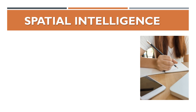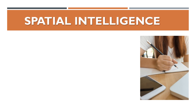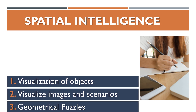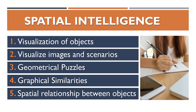So let's get into the video. Now we were talking about spatial intelligence. We have derived five main topics under spatial intelligence — it is completely our version. First is visualization of objects. Second, visualize images and scenarios. Third, geometrical patterns. Fourth, graphical similarities. And fifth, spatial relationships between objects.